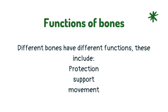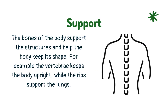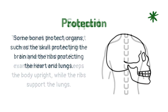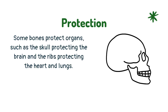Different bones have different functions. These include protection, support, and movement. The bones of the body support the structures and help the body keep its shape. For example, the vertebrae keeps the body upright while the ribs support the lungs. Some bones protect organs, such as the skull protecting the brain and the ribs protecting the heart and lungs.